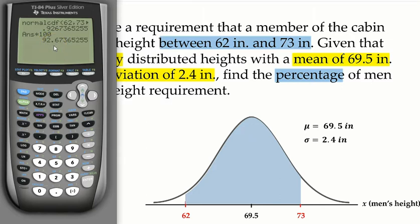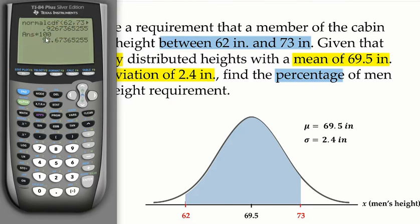We typically round percentages to one decimal place, so the answer is 92.7% of all men would satisfy that height requirement. If the question asked for a probability instead, we know probability ranges from zero to one, and we round to four decimal places — so the probability would be 0.9267.